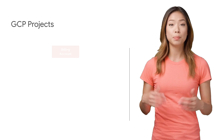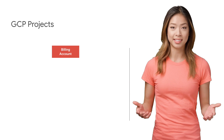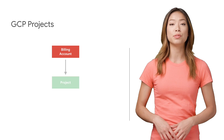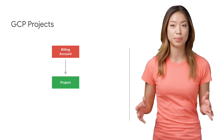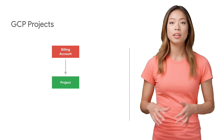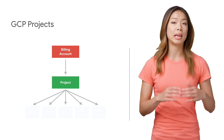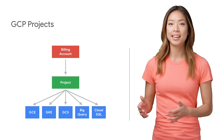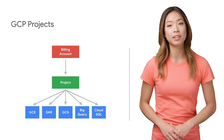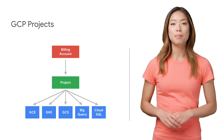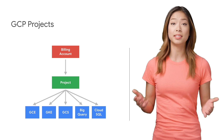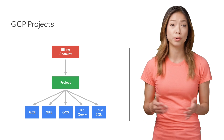Let's start with projects, which are GCP's basic organizing entity and form the basis for using all GCP services, including managing APIs, enabling billing, adding and removing collaborators, managing permissions, and other metadata that describes your workloads.